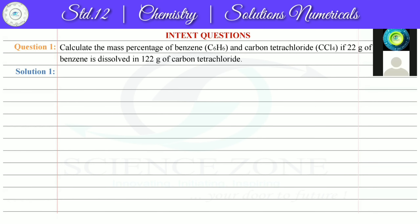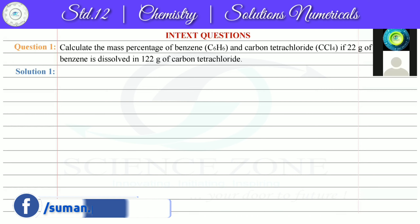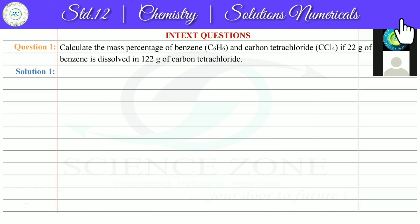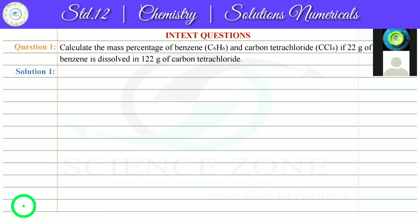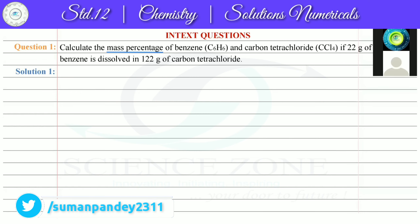We will start Chapter 2: Solutions, in-text questions. Question 1: Calculate the mass percentage of benzene and carbon tetrachloride in which 22 grams of benzene is dissolved in 122 grams of carbon tetrachloride. We have to calculate the mass percentage, which is the weight by weight percentage.